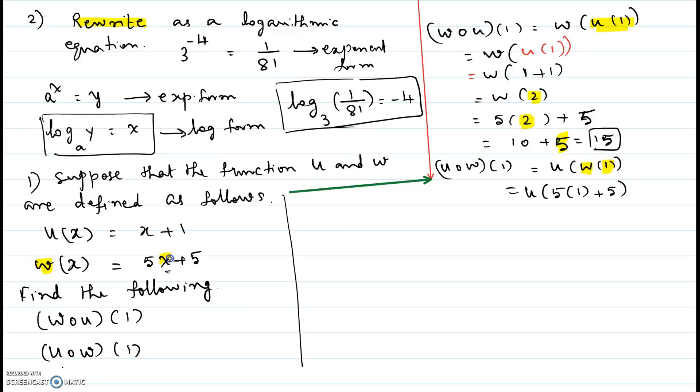So 5 times 1 plus 5. So it is u at 5 times 1, 5 plus 5. So it will be u at 10.